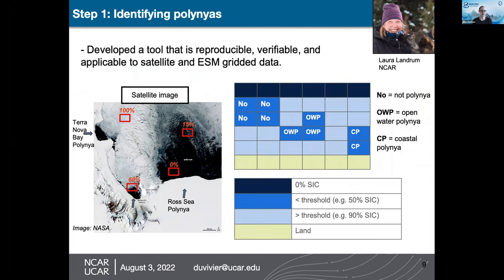The first step of this work is to identify polynias. We've developed a tool that's reproducible, verifiable, and applicable to both satellite and Earth system model gridded data. In our algorithm, if a grid cell falls below a threshold ice concentration and abuts open water, it's not considered a polynia. If it falls below that threshold and is surrounded by higher-concentration sea ice, it's an open-water polynia. If it's surrounded by sea ice and land, it's a coastal polynia.